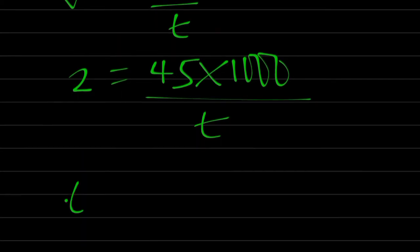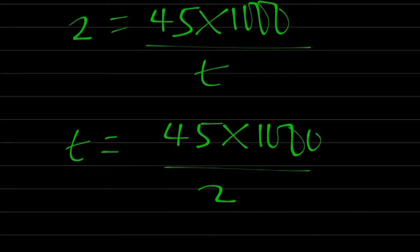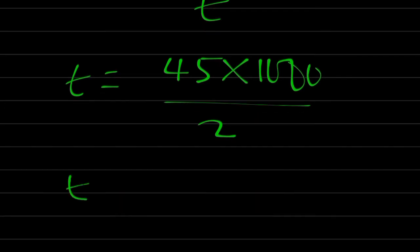Therefore, I have T is equal to 45 times 1000 divided by 2. Therefore, I have my T is equal to 45 times 500.